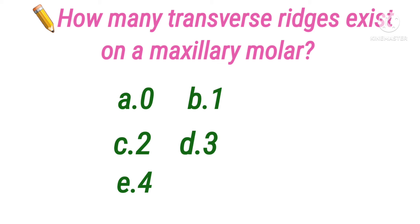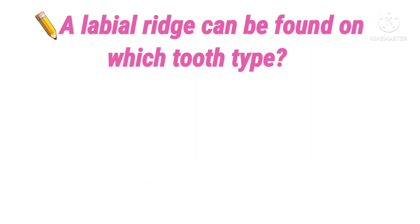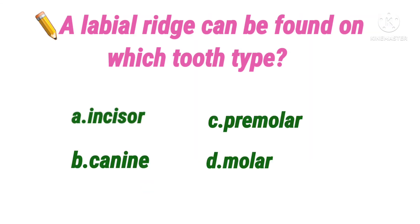Next question: how many transverse ridges exist on a maxillary molar? Option A 0, B 1, C 2, D 3, E 4. The correct answer is option B, 1. Each maxillary molar has one transverse ridge, which runs between the mesiobuccal and mesiolingual cusps.